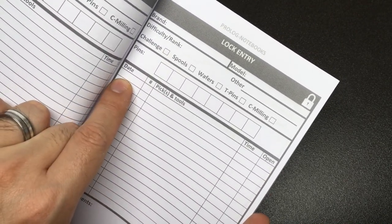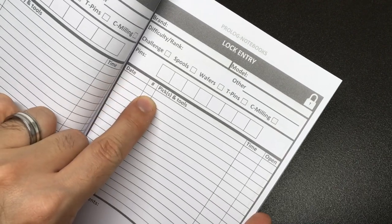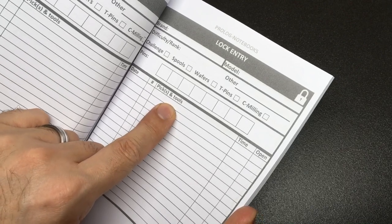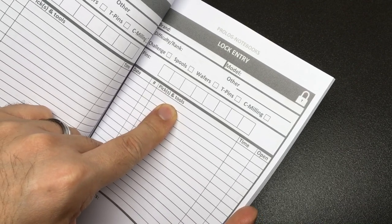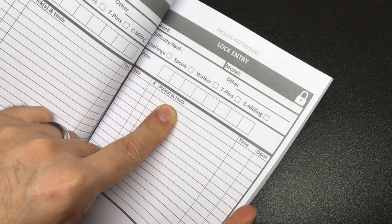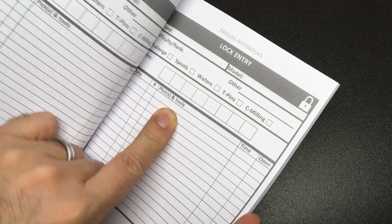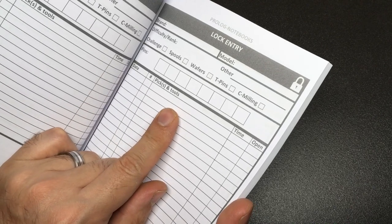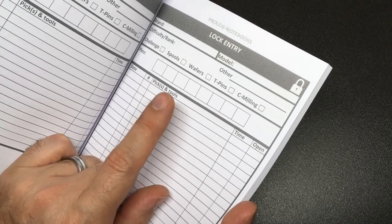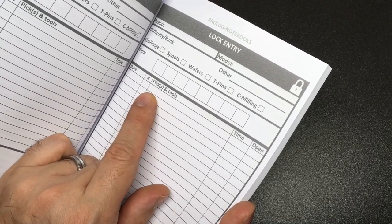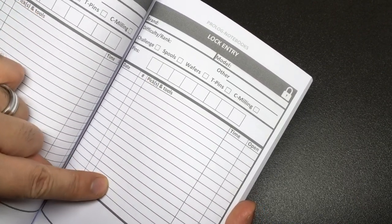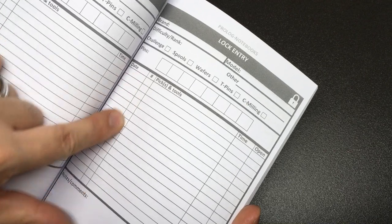Then you have what date, what attempt, what picks you might have used, which actually this is probably one of the most interesting things because if you have a lock with peculiar bidding or a very tight keyway or something, it's quite easy to forget exactly what you used, especially if you pick hundreds of locks. It can be quite useful to have a log and also see how it's changed throughout your attempts at picking it.